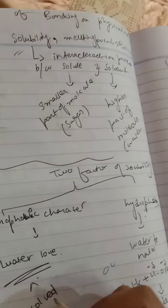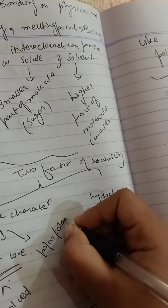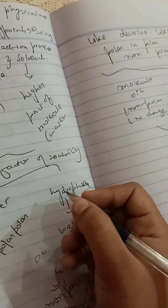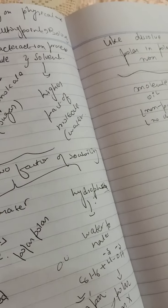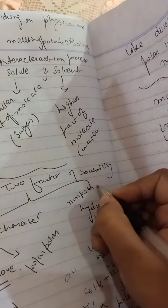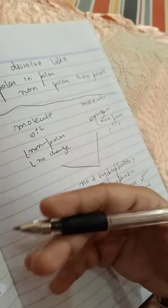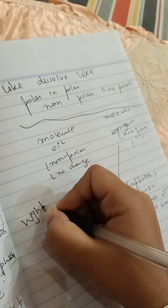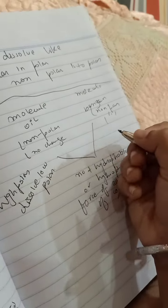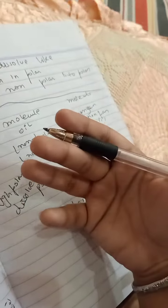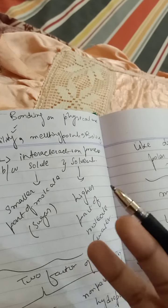Hydrophilic means polar — polar can dissolve. Hydrophobic means non-polar — non-polar cannot dissolve easily in polar. High polar dissolves in high polar, low polar in low polar, and non-polar in non-polar. Polar into polar, as you all know.